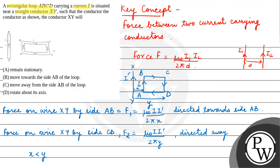Since X is smaller than Y, your F1 will be greater than F2. That means your conductor XY will be attracted towards the AB side. So our final answer is option B: move towards the side AB of the loop. Hope you understood it well, best of luck.